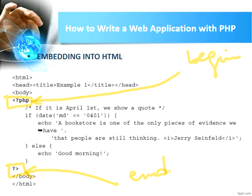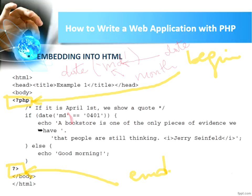Here we have: if date('md') equals 0401 — that means if the date is April 1st — then echo a string. The dot operator is used for concatenation, to concatenate the first string with the second one.